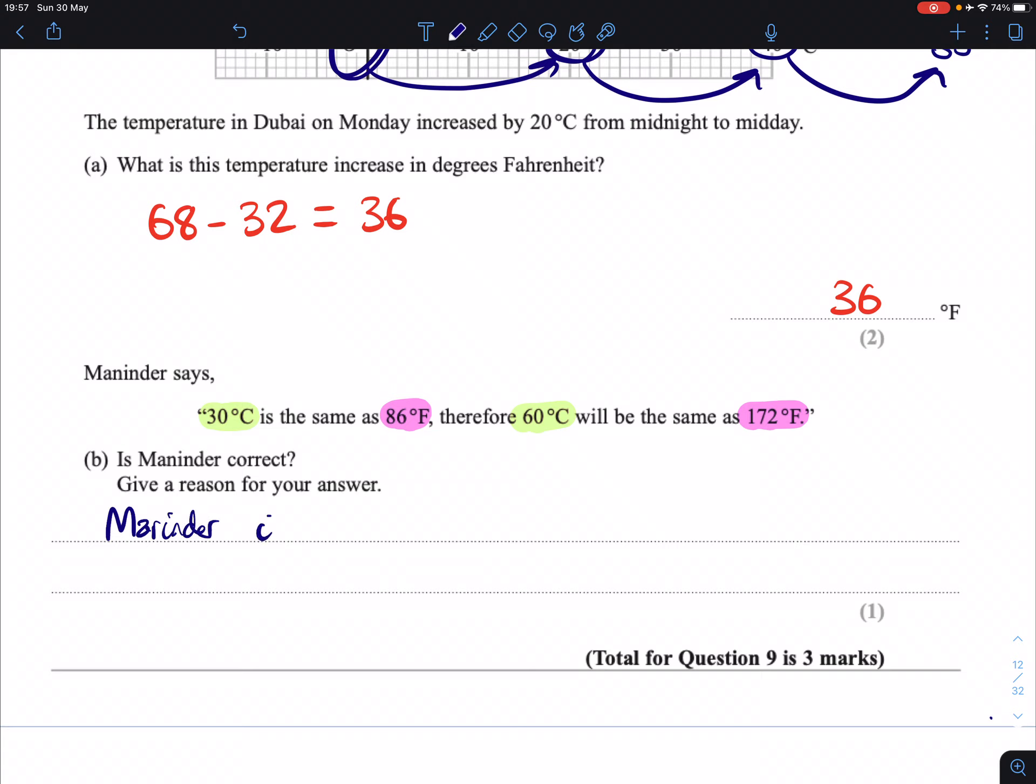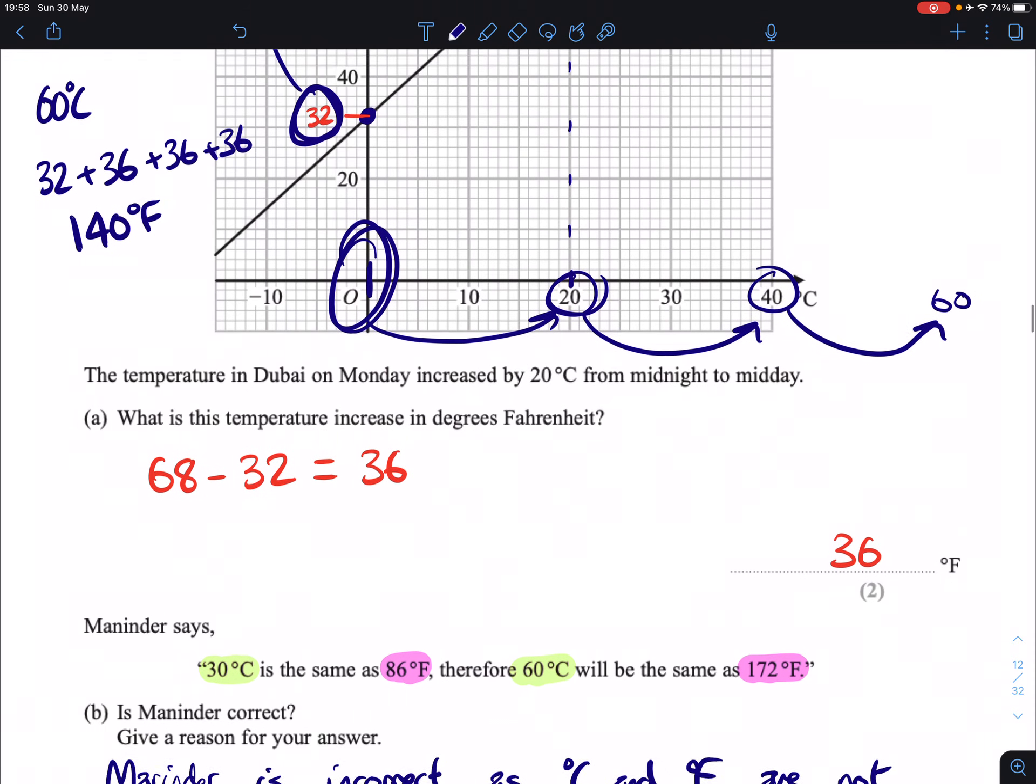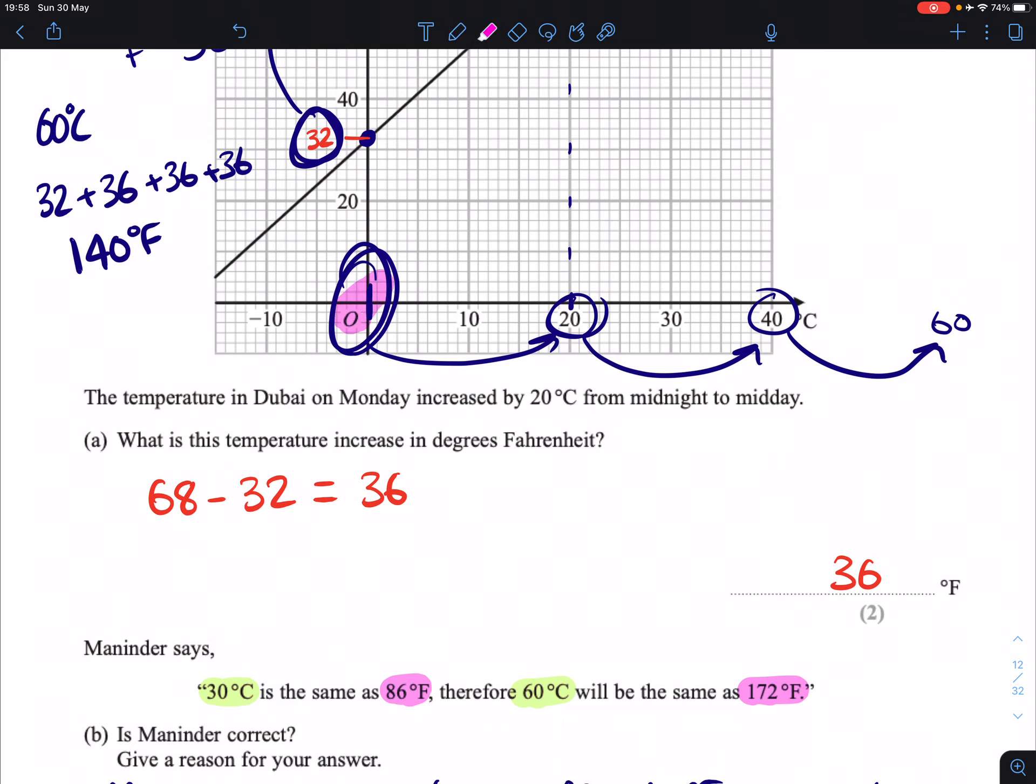So Maninder is incorrect as degrees Celsius and degrees Fahrenheit are not directly proportional. In other words, the line graph does not pass through the origin. The origin being 0, 0. So that is this point there.